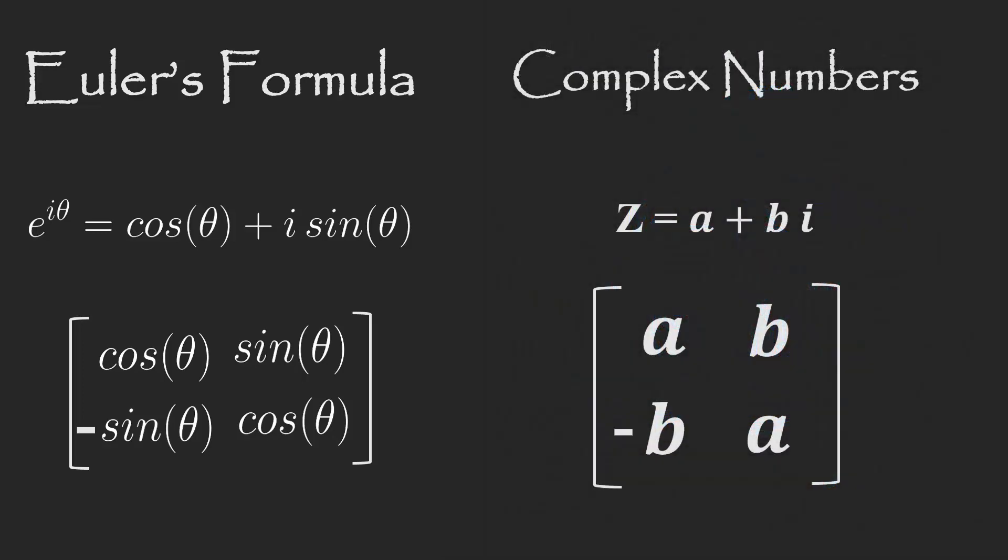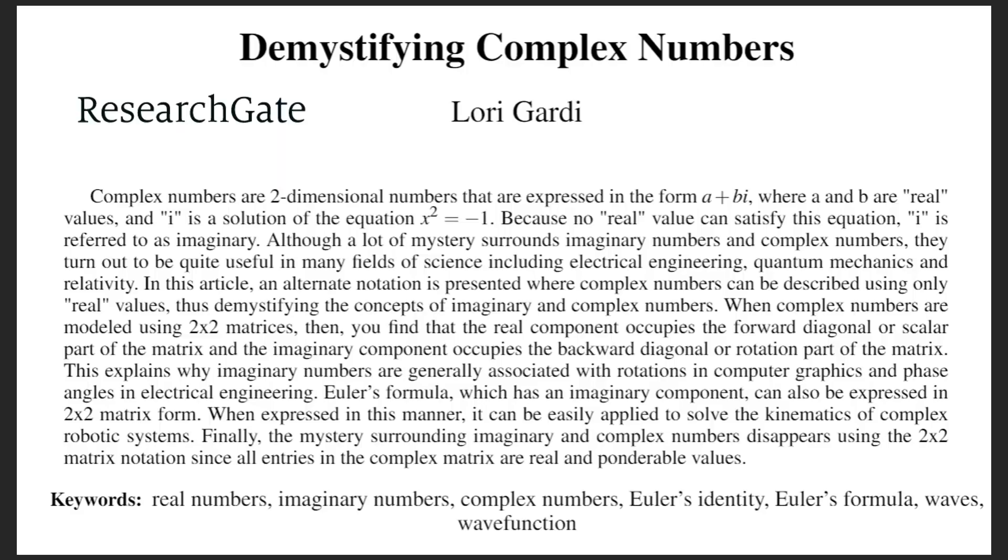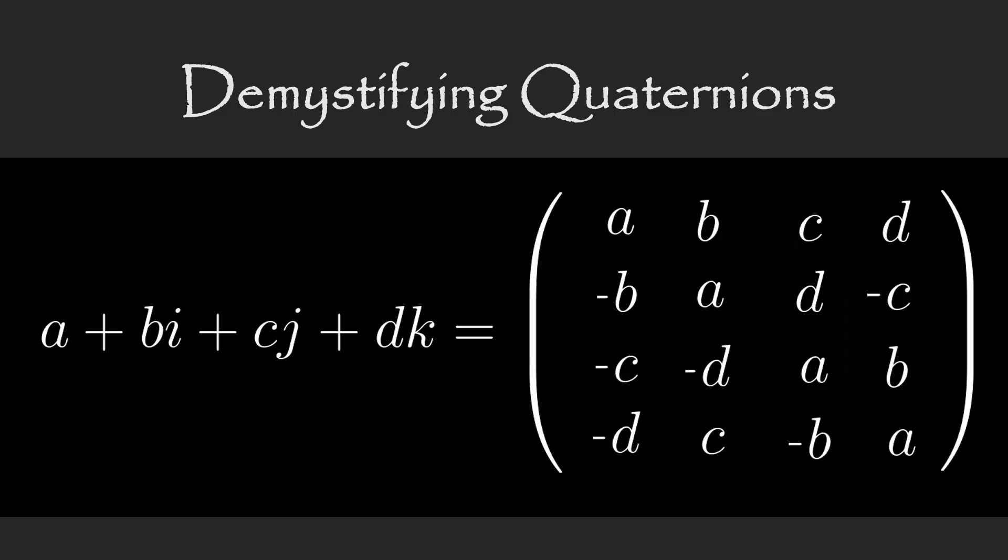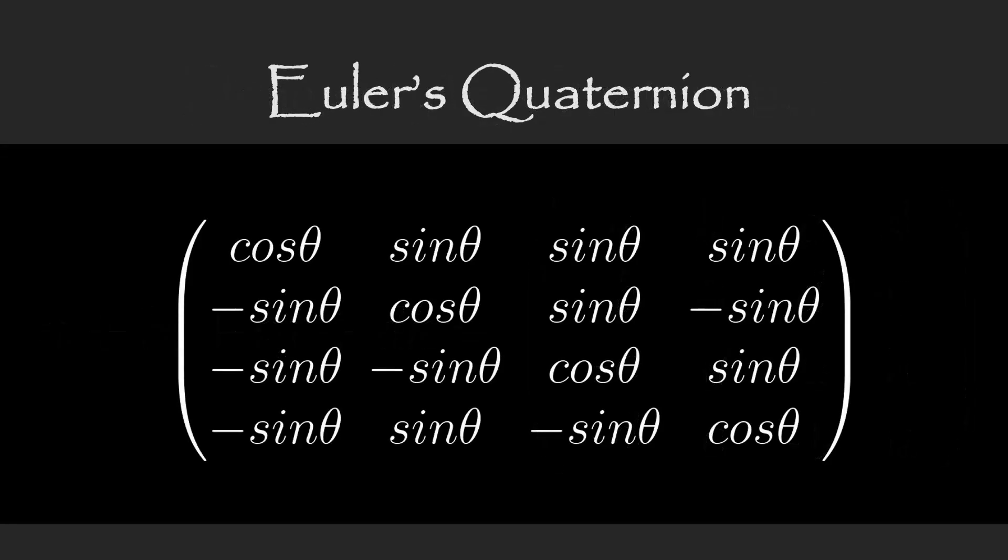Again, in terms of computer implementation, this method is very simple. Any application that uses complex numbers could easily benefit from the two-by-two matrix implementation of complex numbers. For more information on this topic, you can go to ResearchGate and read my preprint paper, Demystifying Complex Numbers. Of course, a similar thing can be done with quaternions, but I will save that for another video.